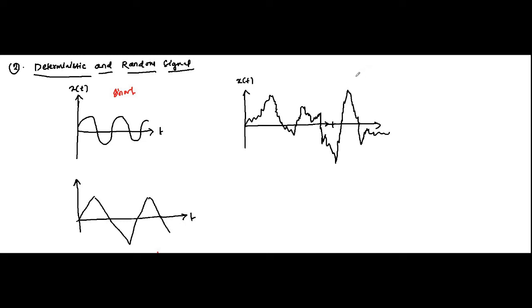Those signals which cannot be represented mathematically are called random signals. And those signals which can be represented with the help of a mathematical equation, which have a regular pattern, whose amplitude and phase behavior at any particular time instant can be predicted in advance with no uncertainty — they are called deterministic signals.